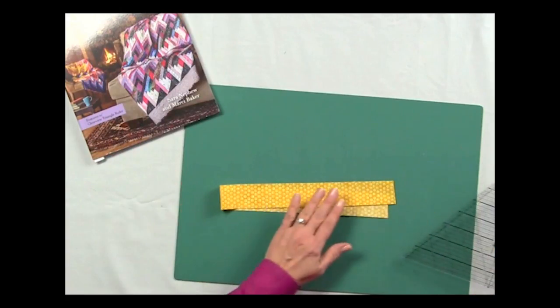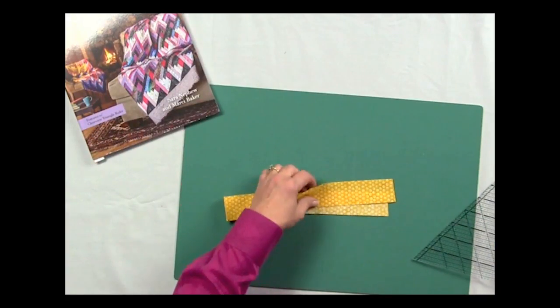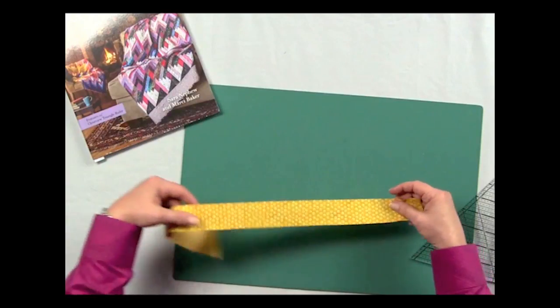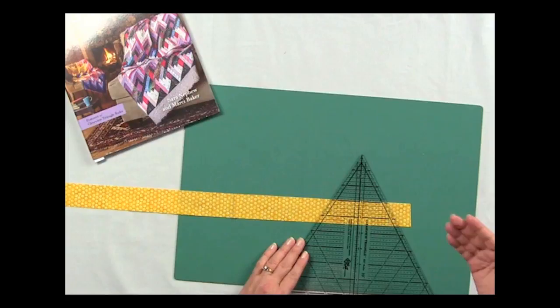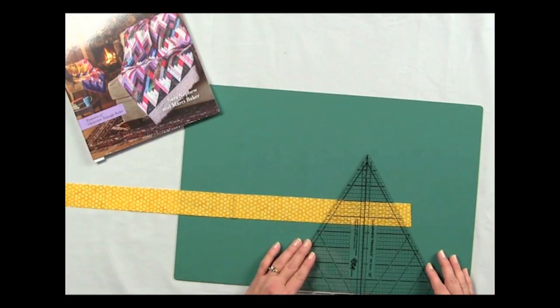So here's how we use the ruler. I've got a strip here cut at one and a half inches, and we're going to cut two different kinds of shapes. One is called a triangle log, and you'll be told what size. Here I'm going to cut a four and a half.